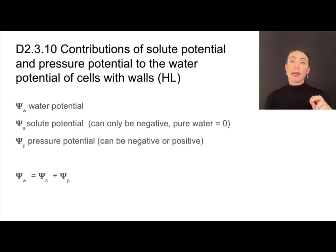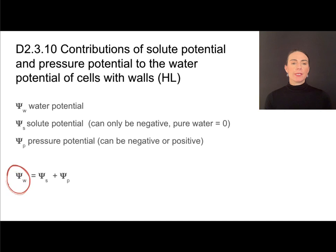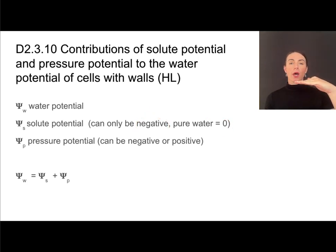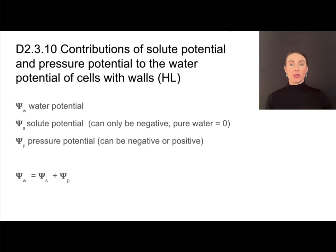We can mathematically quantify the contributions of solute concentration and pressure to water potential. Water potential is the sum of the solute potential and the pressure potential. Remember: solute potential is either zero for pure water, or negative. Any time you add solutes to water, it turns the solute potential negative, and the more solutes you add, the more negative that potential becomes.